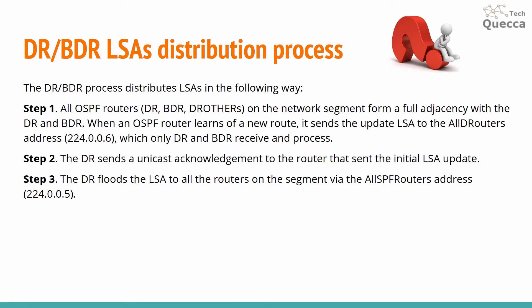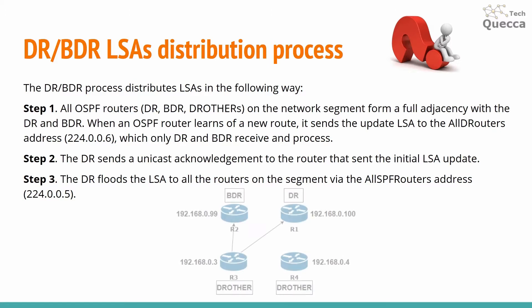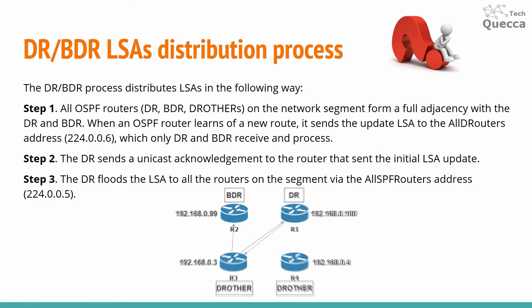The DR-BDR process distributes LSAs in the following way. Step 1: All OSPF routers on the network segment form full adjacency with the DR and BDR. When an OSPF router learns of a new route, it sends the update LSA to the AllDRRouters address 224.0.0.6, which only the DR and BDR receive and process. Step 2: The DR sends a unicast acknowledgement to the router that sent the initial LSA update. Step 3: The DR floods the LSA to all routers on the segment via the AllSPFRouters address 224.0.0.5.